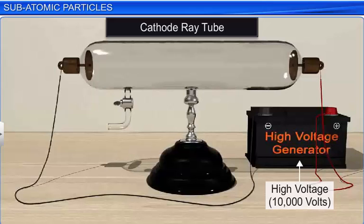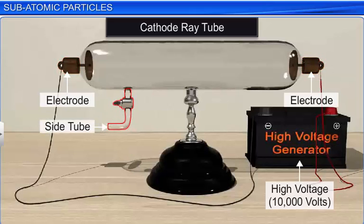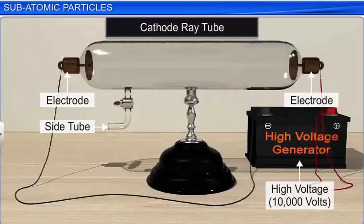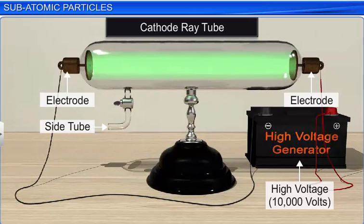The discharge tube was sealed at both ends and fitted with a thin piece of metal called electrodes at each end. It had a side tube fitted with a stopcock connected to a vacuum pump to control the pressure of the gas or air inside. Crookes observed that at a low pressure of 0.01 atmospheres, when a high voltage of 10,000 volts is applied across the electrodes, current starts flowing inside the tube.